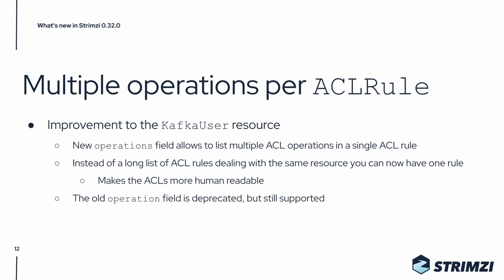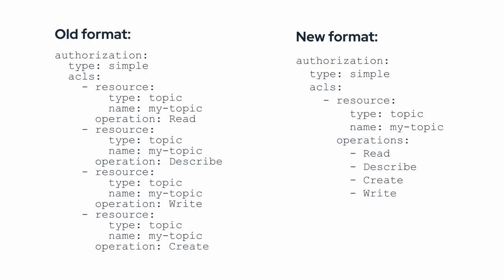Strimzi 0.32 also brings an improvement to the Kafka user resource. It introduces a new operations field which allows you to list multiple ACL operations in a single ACL rule. Thanks to that, instead of a long list of different ACL rules which all deal with the same resource — for example with the same topic — you can now have a single rule which lists all the different operations. The old operation field is still supported but it's now marked as deprecated. On the left side you can see the example of the old format where we can see four different ACL rules all dealing with the same topic and just giving the user different operations. On the right side you have the new format which has only one ACL rule for the topic and lists all four operations in a single list.